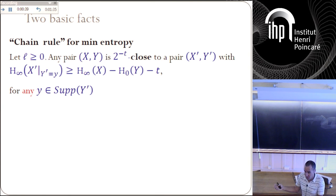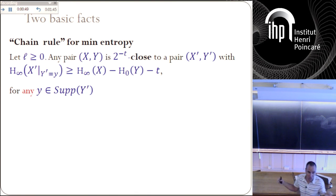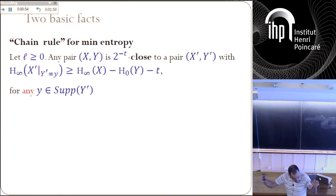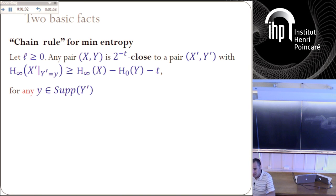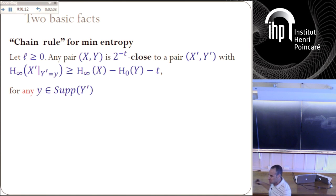You lose an additional t bits to make it work with probability 2 to the minus t. This is some analog of chain rule for min entropy. You have to give away additional t bits, and then you also only have min entropy that high with probability 2 to the minus t. But in our settings that'll be enough. Leo is going to speak more about the chain rule, but for this very informal introduction, there's somewhat of a chain rule for min entropy.